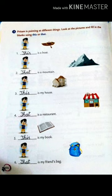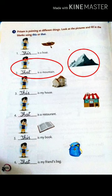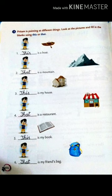Number two is: dash is a mountain. You will fill here 'that', because the mountain is far from Pritam. That is a mountain.